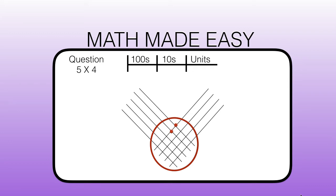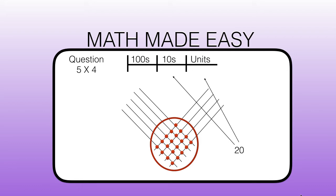Counting the hit points: 1, 2, 3, 4, 5, 6, 7, 8, 9, 10, 11, 12, 13, 14, 15, 16, 17, 18, 19, 20. We have 20 hit points, and so as there are 2 digits we'll put a 0 in the units box and a 2 in the tens box. The answer for 5 times 4 is 20.